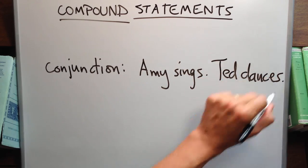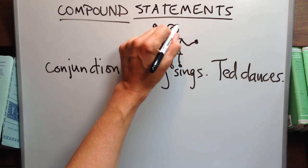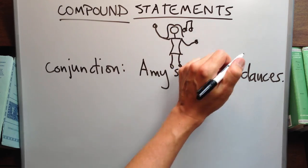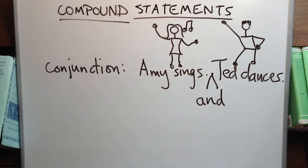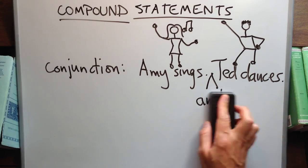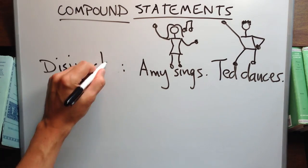Let's now turn to compound statements. The first kind is a conjunction. A conjunction brings together two or more simple statements. Amy sings, Ted dances. Those are simple statements. We could bring them together with AND and form a compound statement.